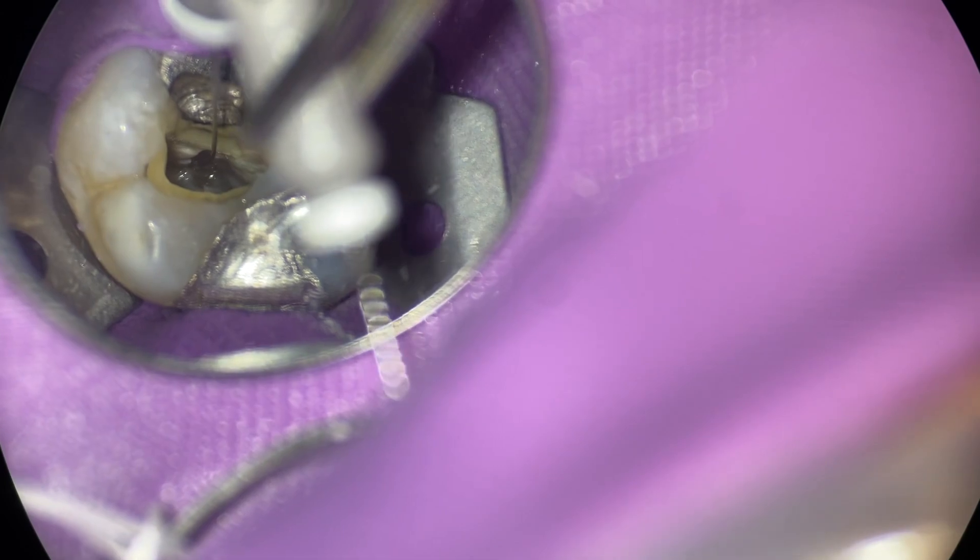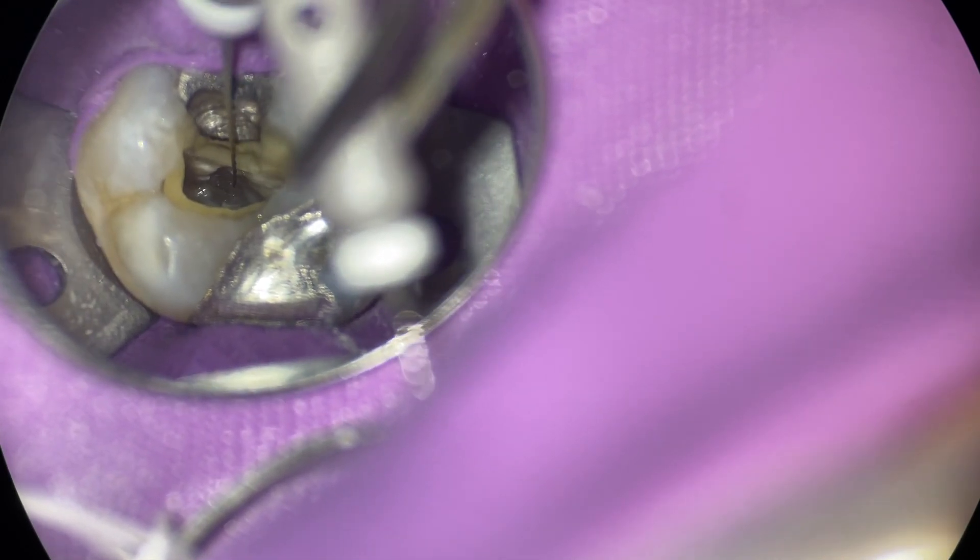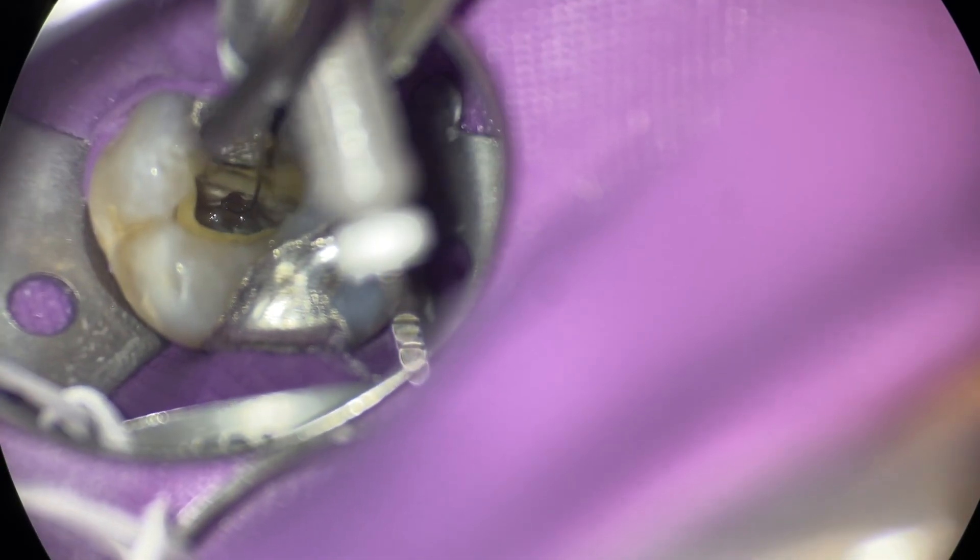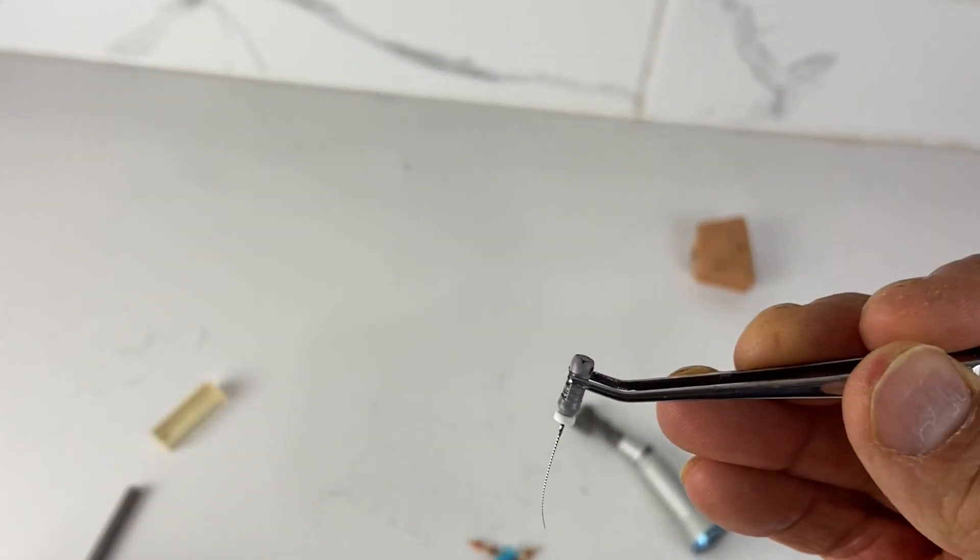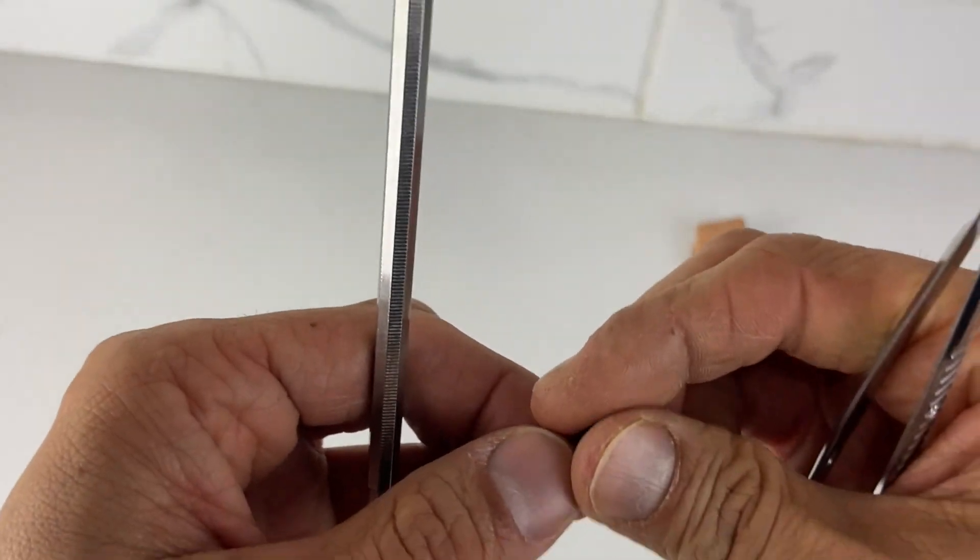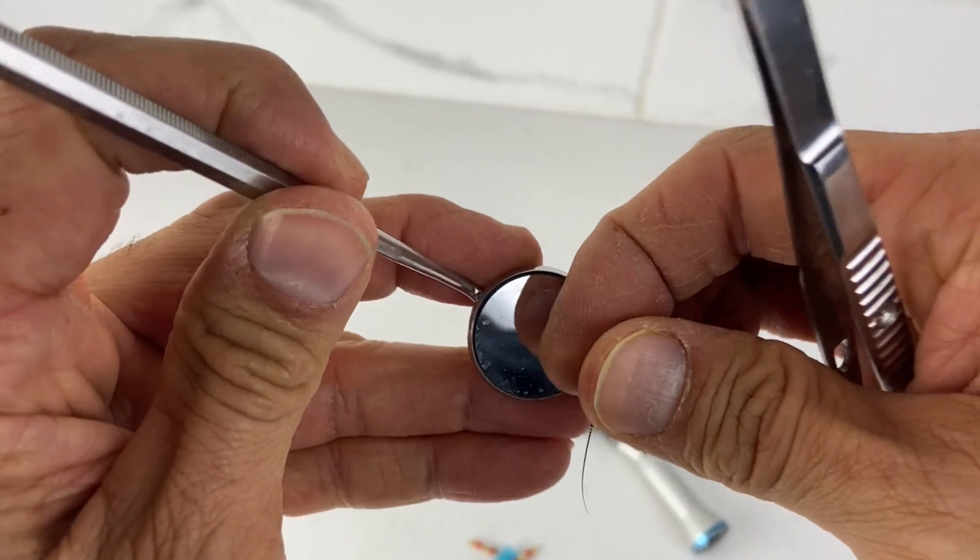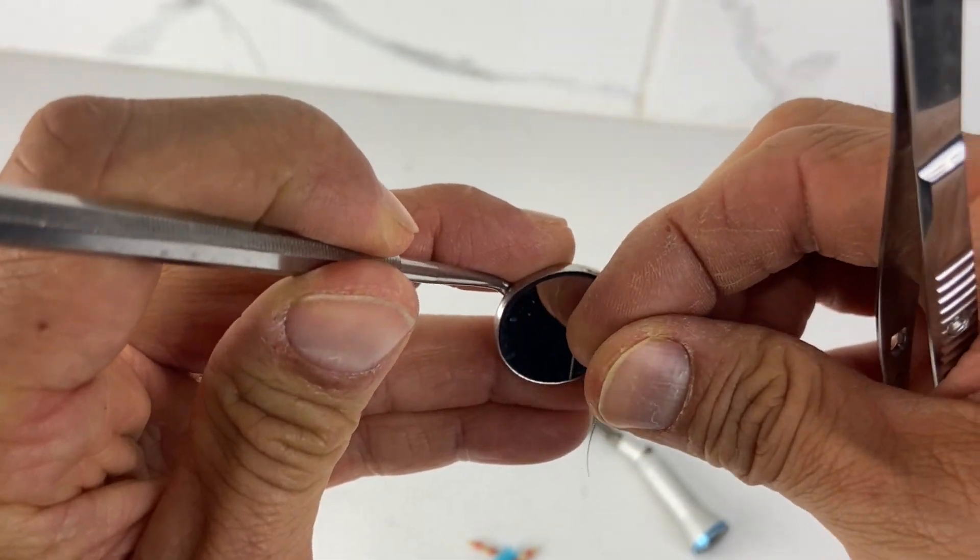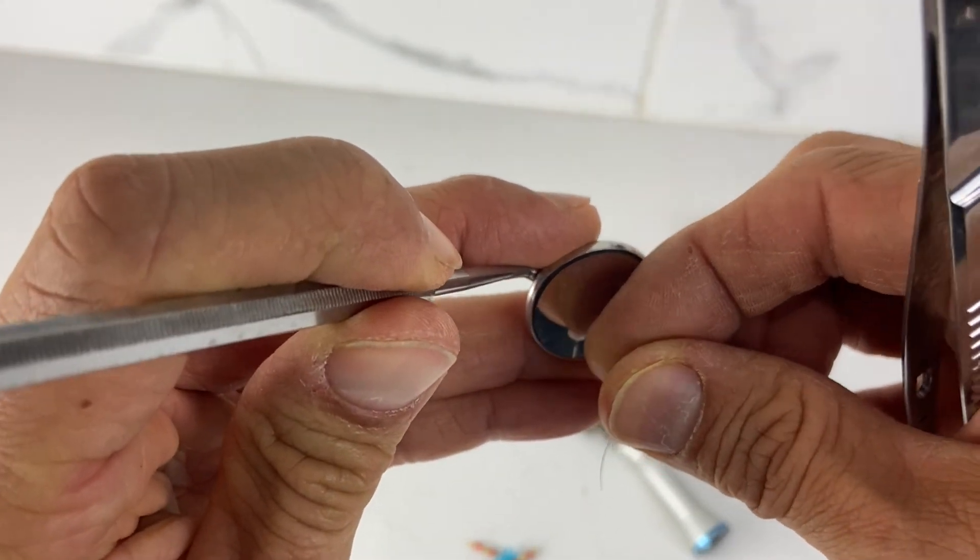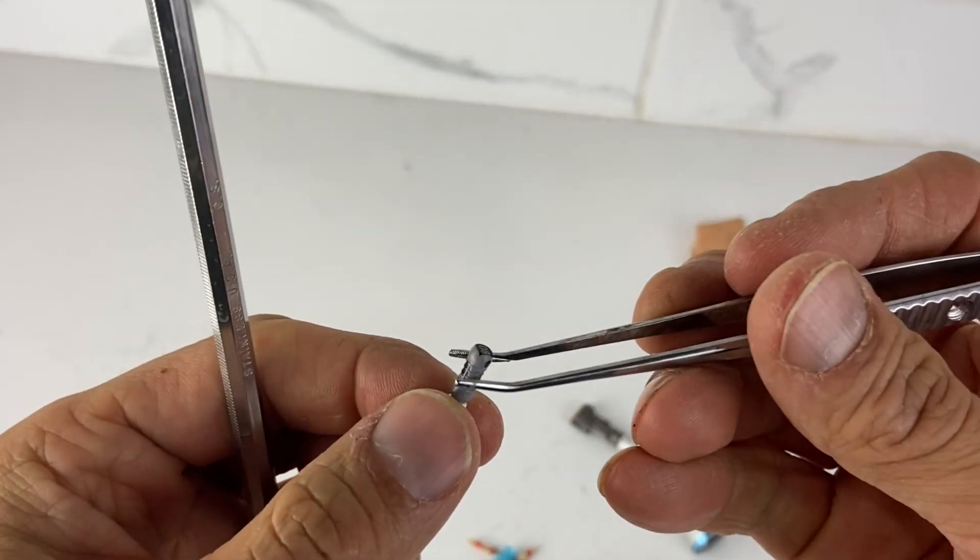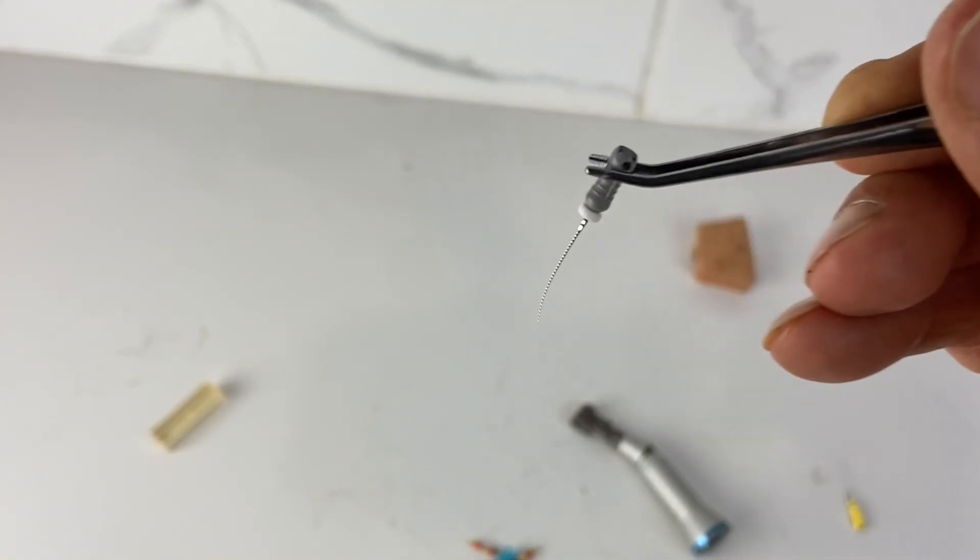So what I'll do is I'll use cotton forceps to place my files, especially on sevens. It's really hard to see what you're doing. So for example, I've got my mirror and you're trying to see what's going on and it's really hard with your mirror. There's not a lot of room. So what I'll do is I'll use cotton forceps and that'll be placement.